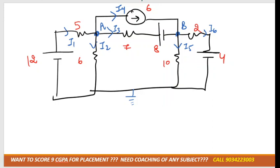This is the question we have to solve based on nodal analysis. If I apply KCL at node A, the incoming current is only I1. I2, I3, and I4 are all outgoing currents.